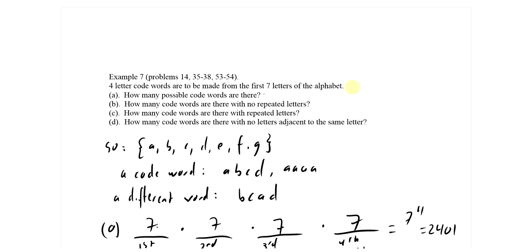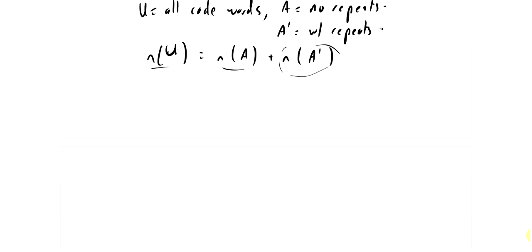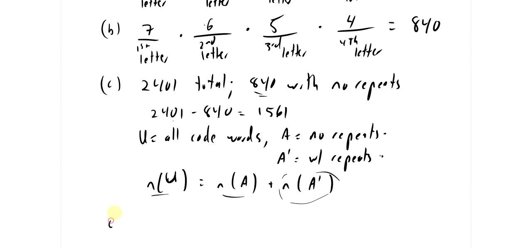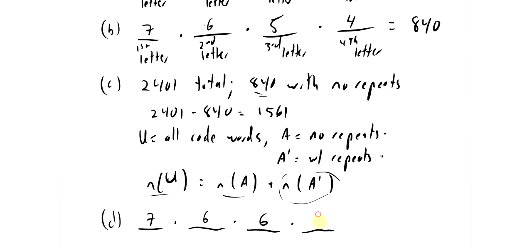How many code words have no two adjacent letters the same? You choose the first letter freely (7 choices). The second letter can't match the first (6 choices). The third can't match the second (6 choices). The fourth can't match the third (6 choices). So 7 × 6 × 6 × 6 = 1,512 code words with no adjacent repeated letters.